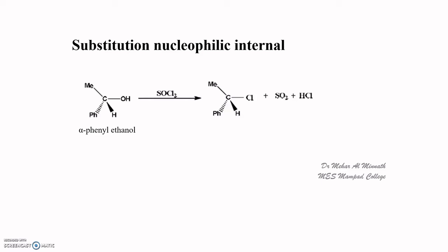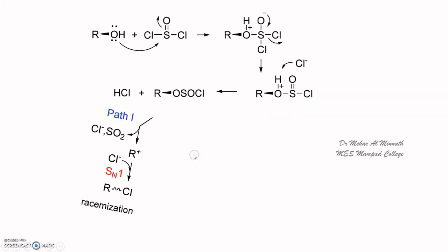As an example, we take the reaction of alpha-phenyl ethanol with SOCl2. We get the corresponding chloride with retention of configuration — if you start with the S alcohol you get the S chloride, and if you start with the R alcohol you get the R chloride. So the configuration of the product and the reactant remains the same. In this nucleophilic substitution, the nucleophile is a chloride ion.